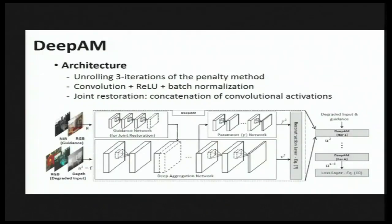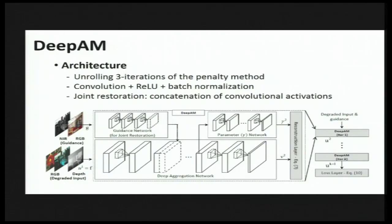This is our whole framework: we unroll the solution of the penalty method, and each network block consists of convolution, non-linearity, and batch normalization layers. In the case of joint restoration, we concatenate the convolutional activations between the input and guidance images.